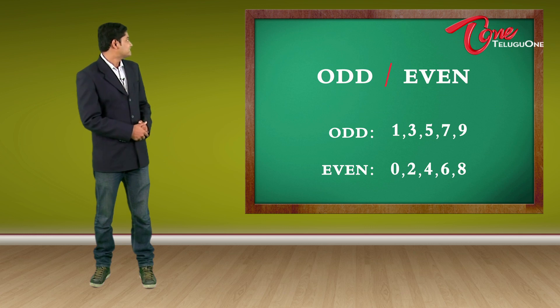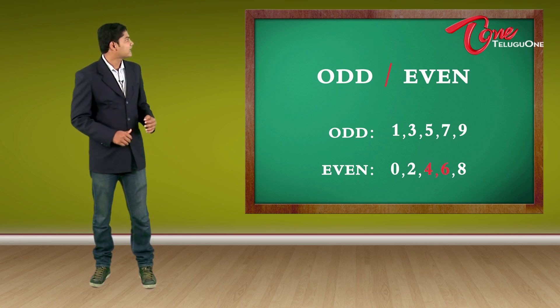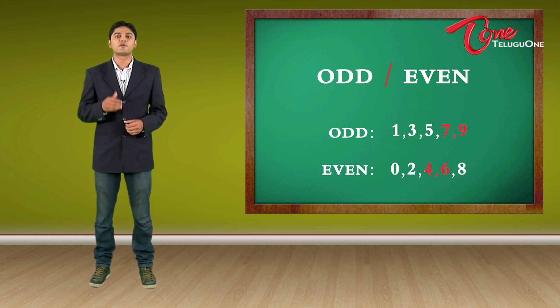Imagine I say 6, you are supposed to say 4. And if I say 9, you are supposed to say 7 because the previous odd number before 9 is 7.